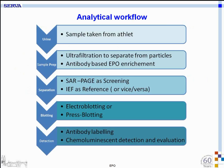The analytical workflow starts with urine — the sample is taken from the athlete — followed by sample preparation, beginning with ultrafiltration to remove particles, and then an antibody-based EPO enrichment, a complex method to increase the concentration of EPO in the sample. The next step is a so-called SAR-PAGE for screening, or isoelectric focusing as a reference for positive screening results, or vice versa.